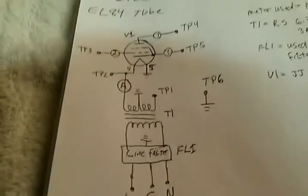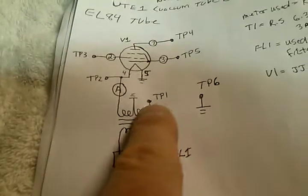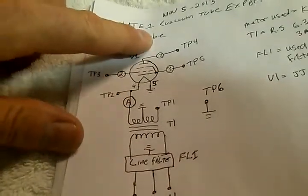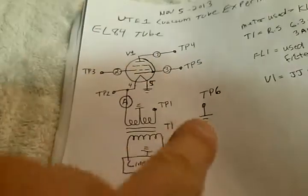Again these are the test point call outs. You get test point one, two, three, four, five, and six.